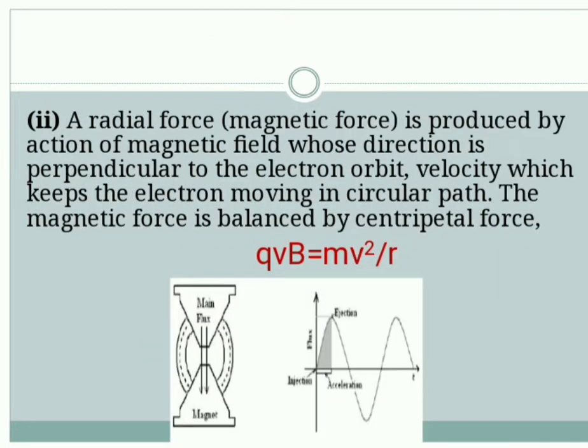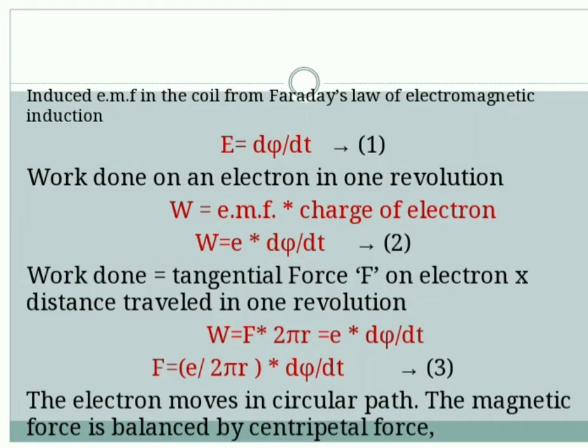The second effect is a radial force is produced due to increasing magnetic field. Its direction is perpendicular to the plane of the electron orbit. These two forces are made to be balanced, that is, magnetic force is equivalent to centripetal force. That is written as qVB equals mV²/R.